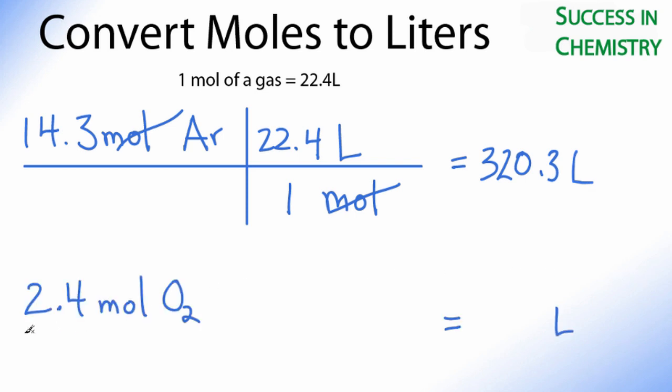So we'll do the same thing. We'll draw a line across here, and then like this. And since we want to cancel out moles, we'll need to get moles on the bottom, and we want to end up with liters, we'll put that up here. Again, one mole is 22.4 liters.